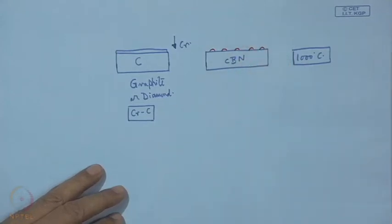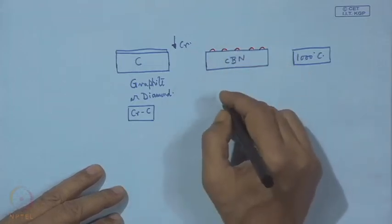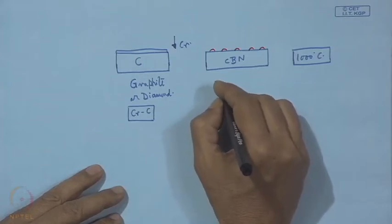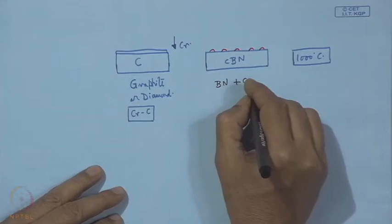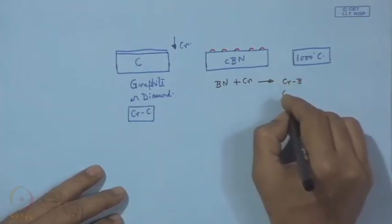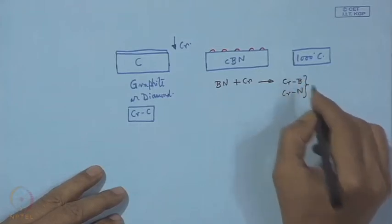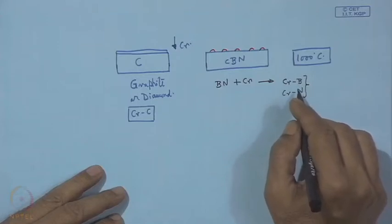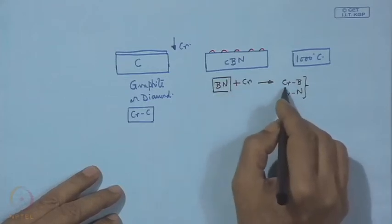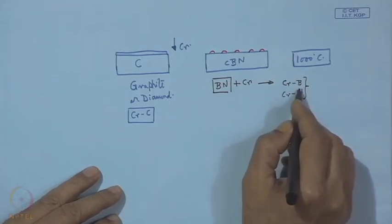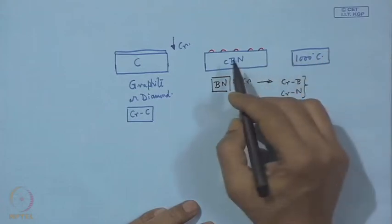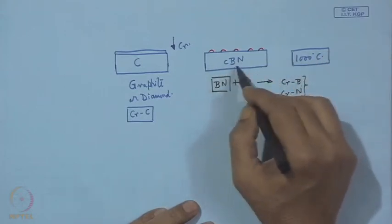This can be explained by the fact that the substrate participation was not encouraging — because it is BN, and when chromium is deposited one would expect either chromium boride or chromium nitride to form. However, from thermodynamic data, boron nitride is much more chemically stable than chromium boride or chromium nitride, and as a result 1000 degrees was not enough to have a continuous coating of chromium on this boron nitride substrate.